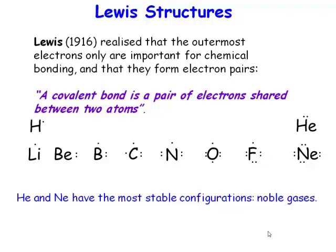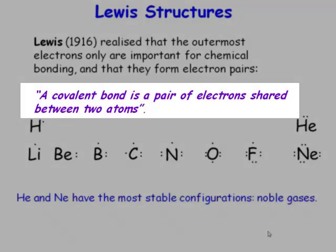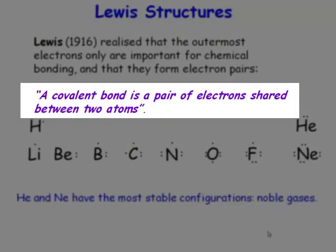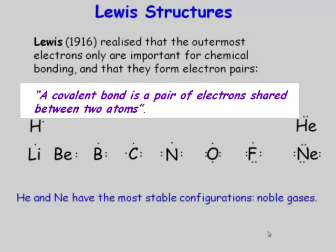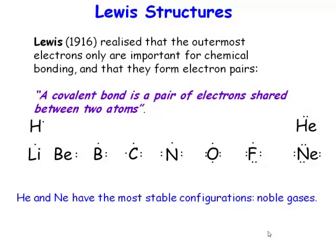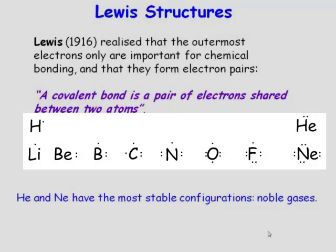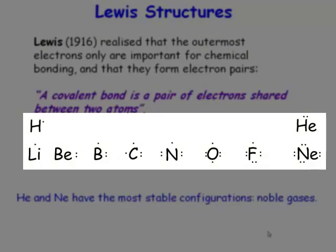The only electrons that are important in atoms are the outermost or valence electrons. The chemical bond consists of a pair of electrons. So when chemical bonds form, they form through sharing electrons between two atoms. If we look at the first and second periods of the periodic table, these are the number of valence electrons of each of these atoms.